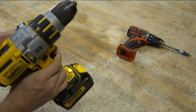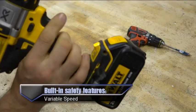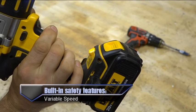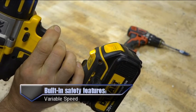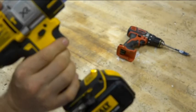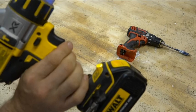Most newer drills are variable speed meaning the harder you pull the trigger, the faster it will spin. This is an excellent feature when you only want to drill in a certain depth.